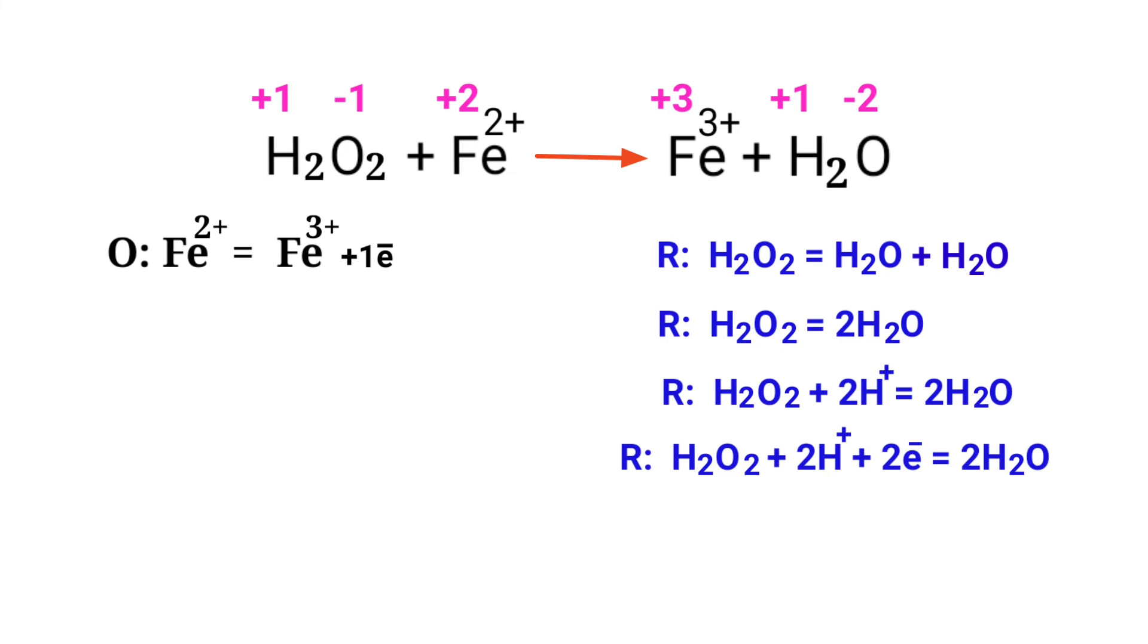Make electron gain equivalent to the electron lost. The electrons lost in the oxidation half reaction must be equal to the electrons gained in the reduction half reaction. In the oxidation half reaction, there is one electron present. But in the reduction half reaction, there are two electrons present.